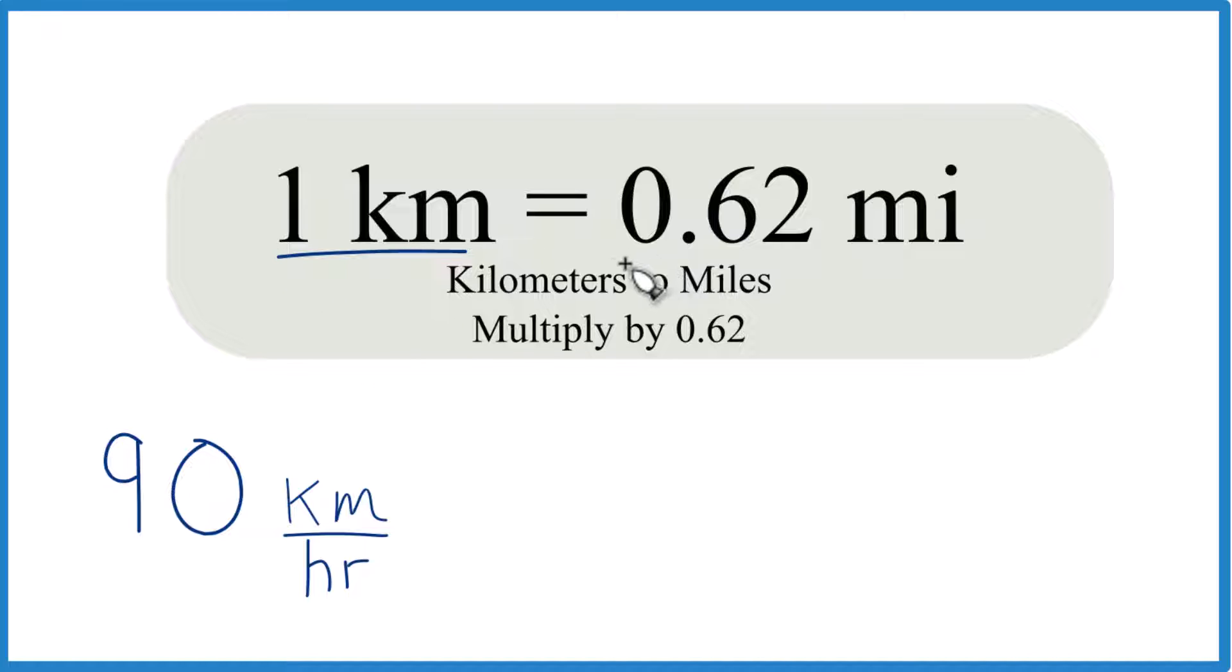So one kilometer is equal to 0.62 miles. If you need more decimal places, you could go 0.621371, and some people just use 0.6.